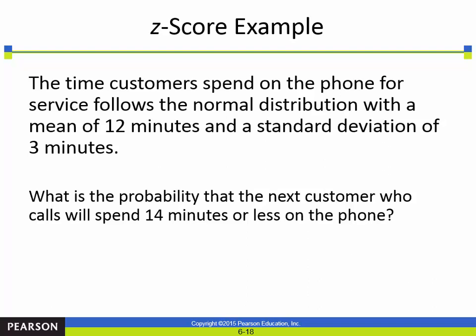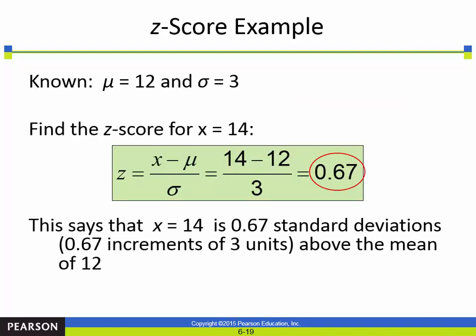Here's an example. The time customers spend on the phone for service follows a normal distribution with a mean of 12 minutes and a standard deviation of 3 minutes. What is the probability that the next customer who calls will spend 14 minutes or less on the phone? All right. So we know the mean. We know the standard deviation. We can find a z-score. So for the x of 14, that wasn't hard. So if x equals 14, that is 0.67 standard deviations above the mean. Still doesn't give us the probability, though, right? It just tells us, in essence, what we did there is we converted the x of 14 into a z of 0.67. Does that make sense?